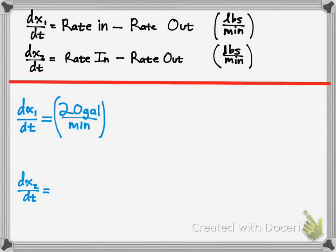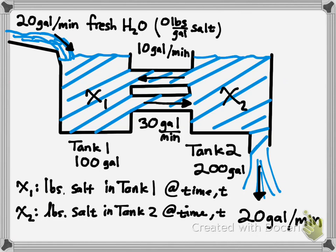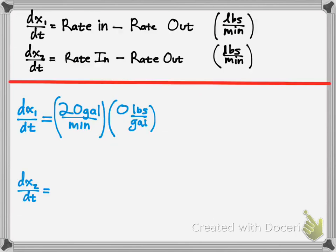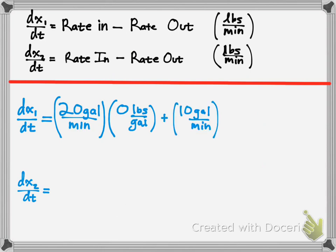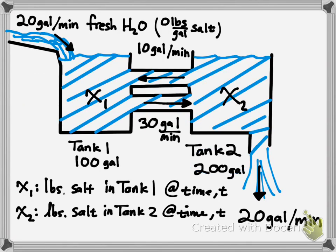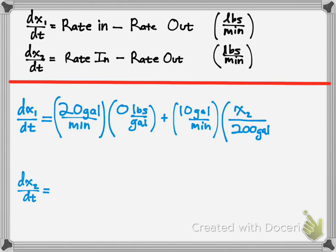We have 20 gallons per minute coming in. But remember that we are measuring pounds of salt. That's fresh water, so we've got to multiply that by 0 pounds of salt per gallon. We're measuring the concentration of salt, not just water in general. What else is coming in? The 10 gallons per minute. Then you add 10 gallons per minute. But now you want to know what the concentration of salt is at that time. Concentration is the volume in there over the total volume. The total volume in the tank is 200 gallons for the rate coming from the second tank. The concentration of salt in tank 2 is x2.